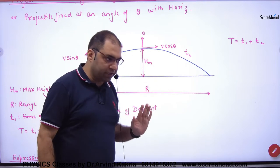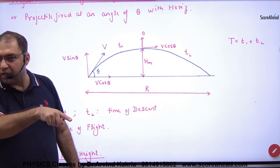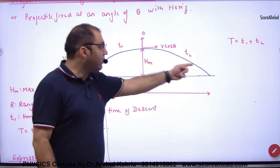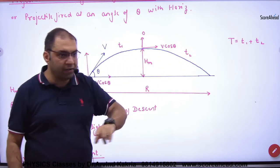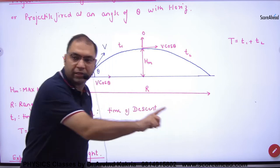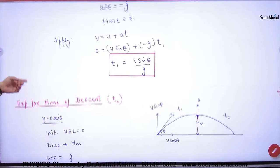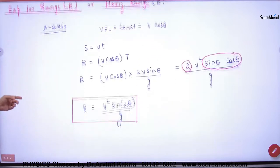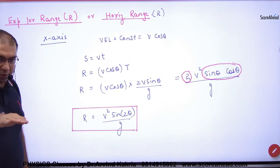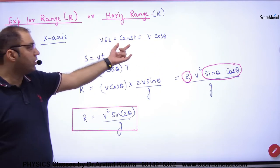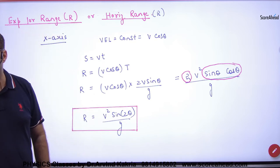So R distance is covered in how much time? Time of flight. Because R distance is covered in time of flight, capital T. So if I have a range of R, then in x-axis what equation will be? Velocity constant, how much? vcos theta.